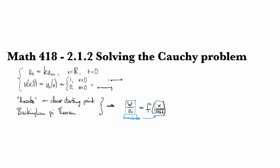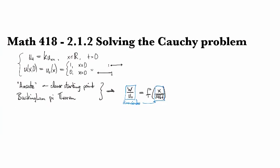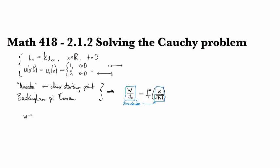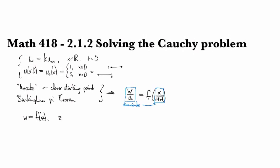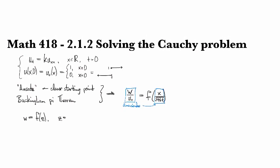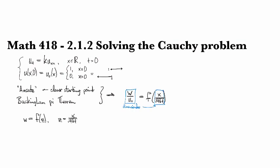Okay, so the idea is to start from something that looks like this. So let's suppose that W is some function of Z, where our variable Z is X over square root 4KT.